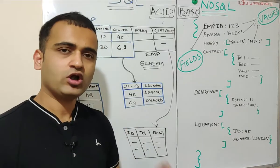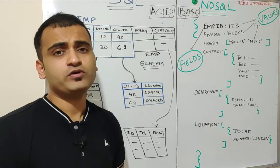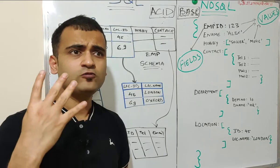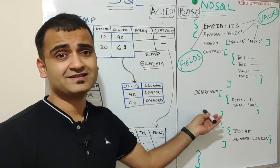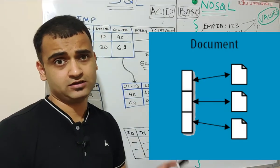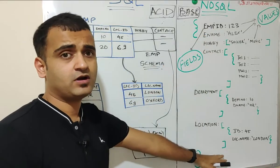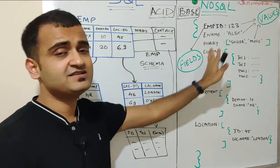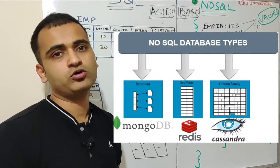Now quickly understand what kind of NoSQL database we have in the market. So if you have to categorize, you can categorize it into four different categories. First, you have already seen it is a document database. As the name suggests, the data is stored in the form of a document and in the form of fields and value pairs. Famous example, MongoDB.